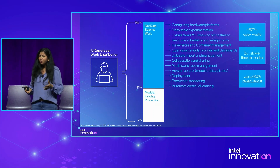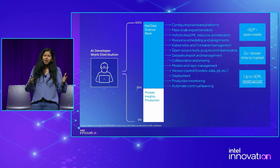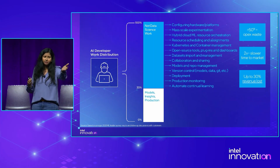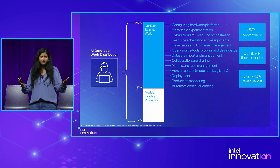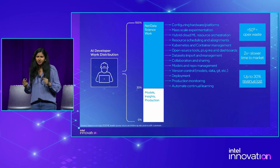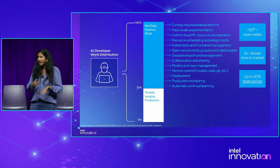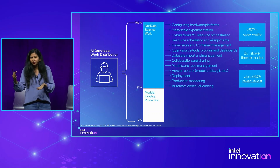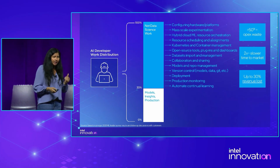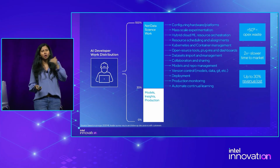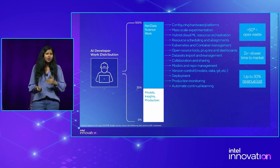As a data scientist, most of us actually spend time on not the most important data science work. Rather, most of our time is spent making sure we are configuring the hardware platforms, doing resource orchestration, et cetera — which is not the fun part. We do want developers to focus more on models, insights, production, and innovations, and not focus so much on the rest of the stuff. So how does Intel help developers focus on what is innovative and increases their productivity while ensuring seamless AI deployment?